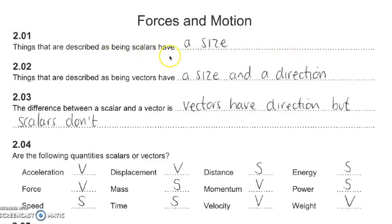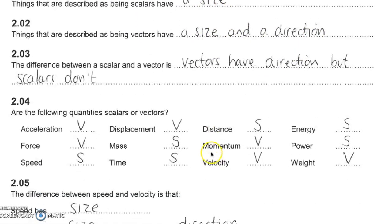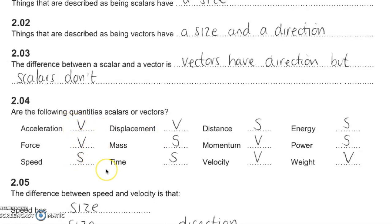Scalars simply have got size or magnitude and vectors have got both size and direction. So if we look down here, we've got a couple of examples of what are just scalars. So speed, mass, time, distance, energy and power are all examples of what we call scalars.